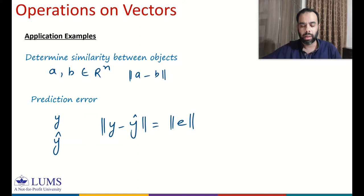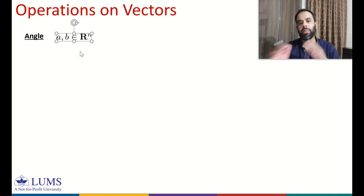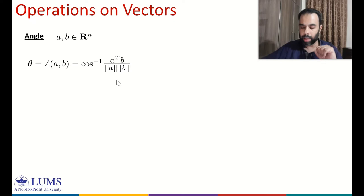Distance can be used to compare two vectors. Another operation that can be used to compare two vectors is the angle between them. We take two vectors A and B in R^n. The angle between vectors A and B is given by cosine inverse of A-transpose-B — which is the inner product — divided by norm of A times norm of B. This quantity is the normalized inner product, and we take the cosine inverse of it.